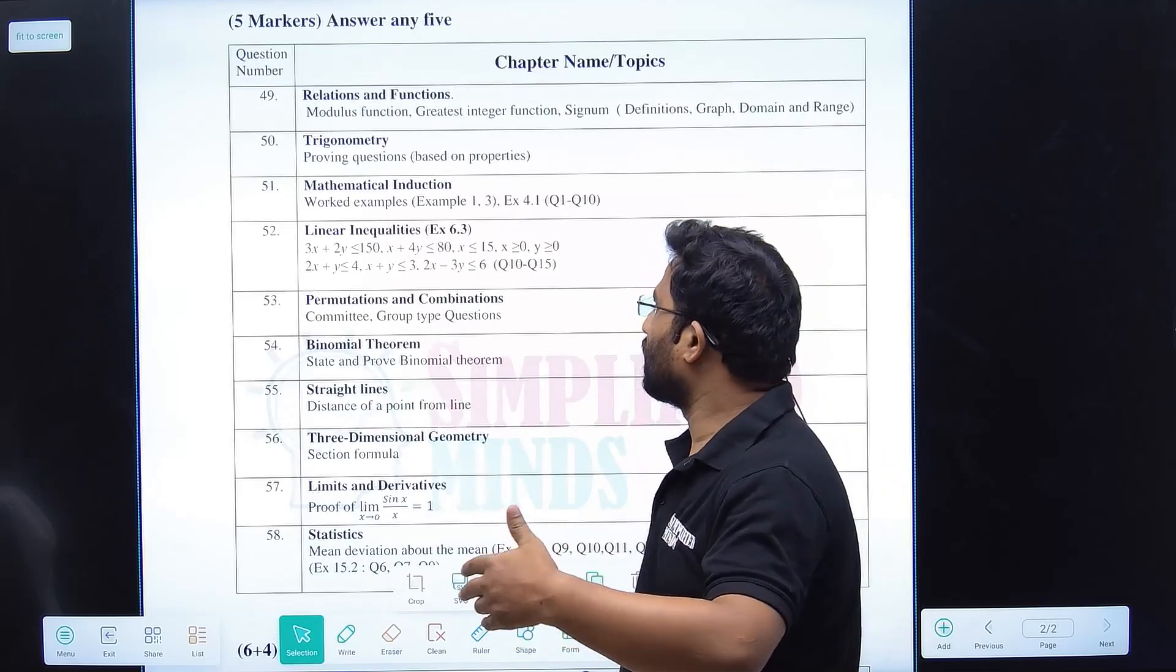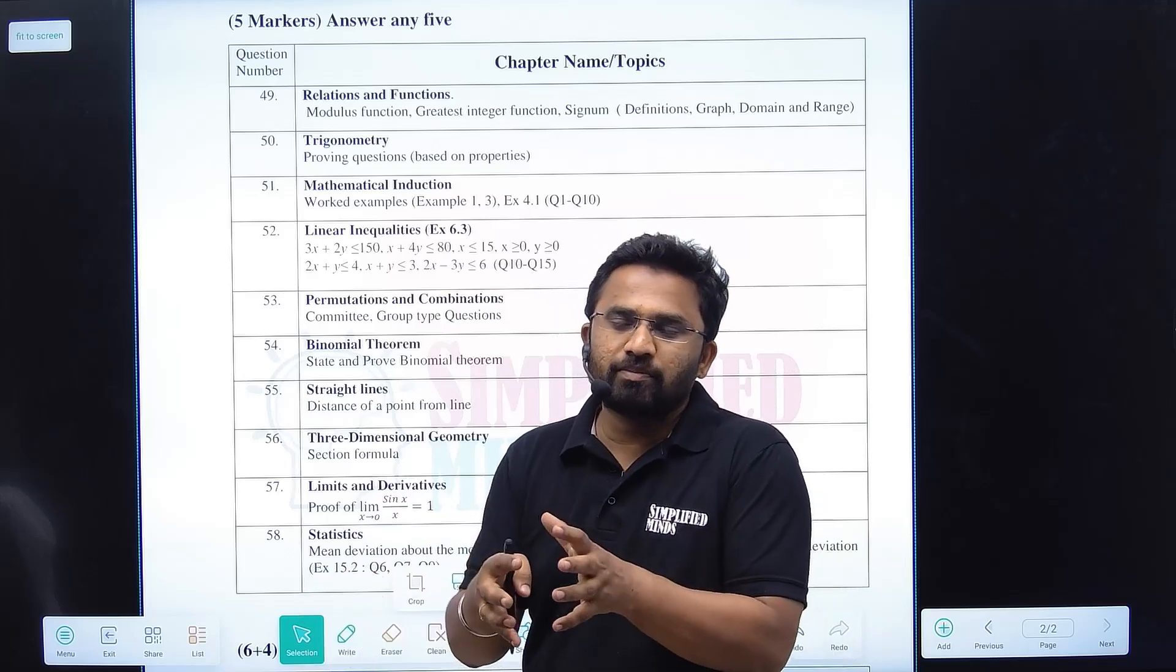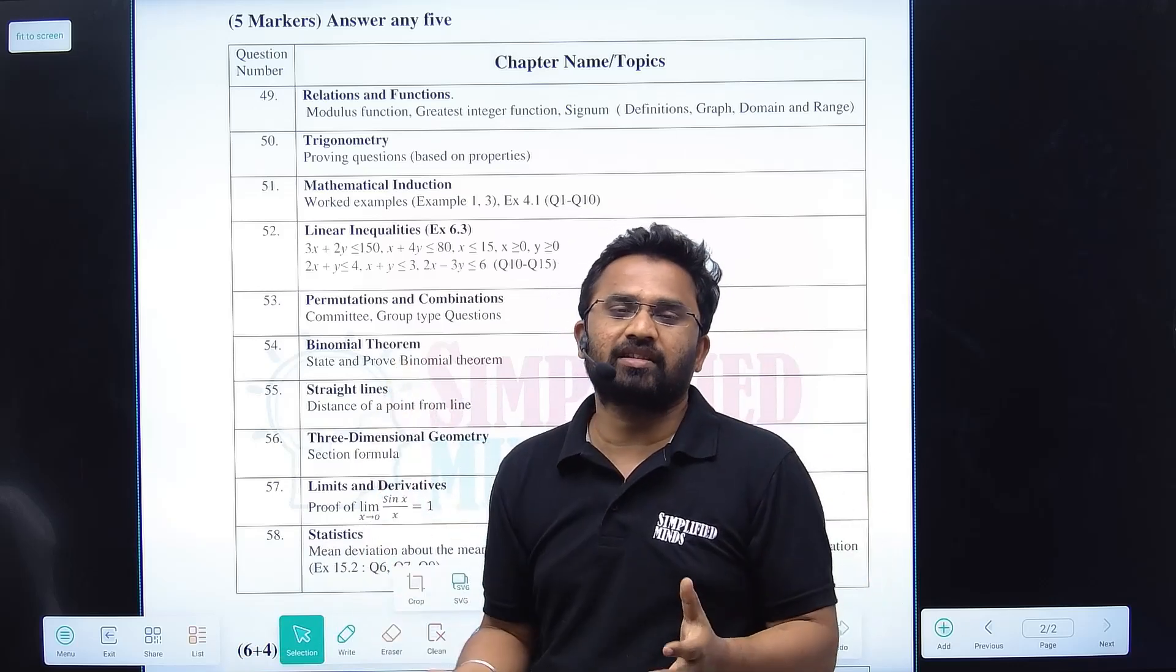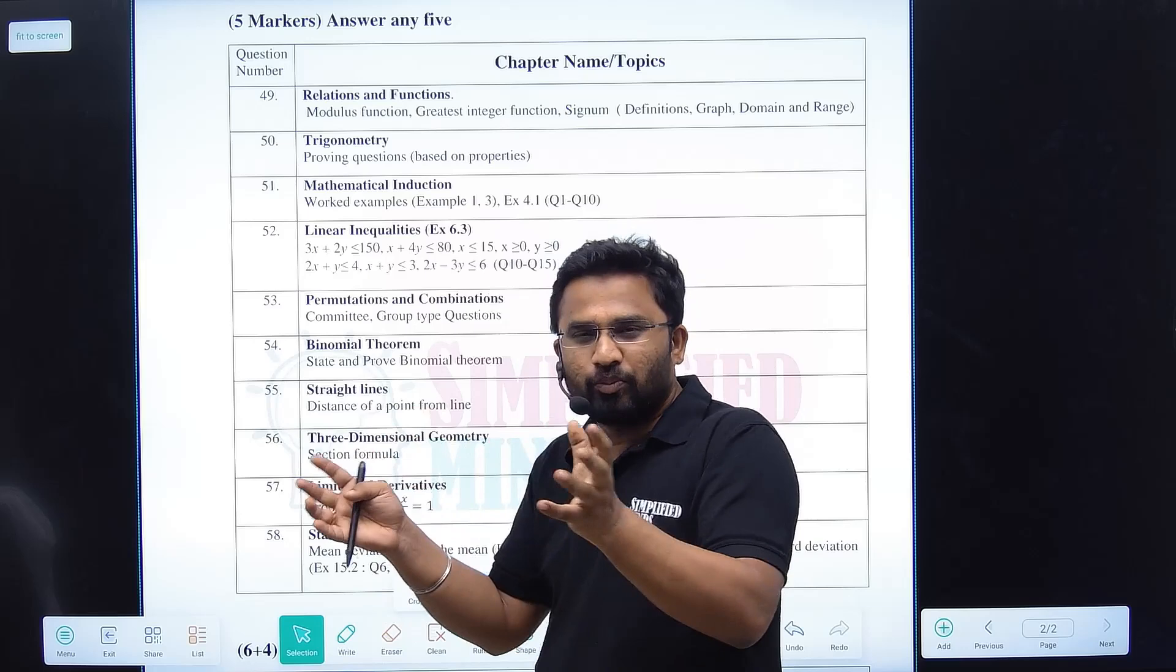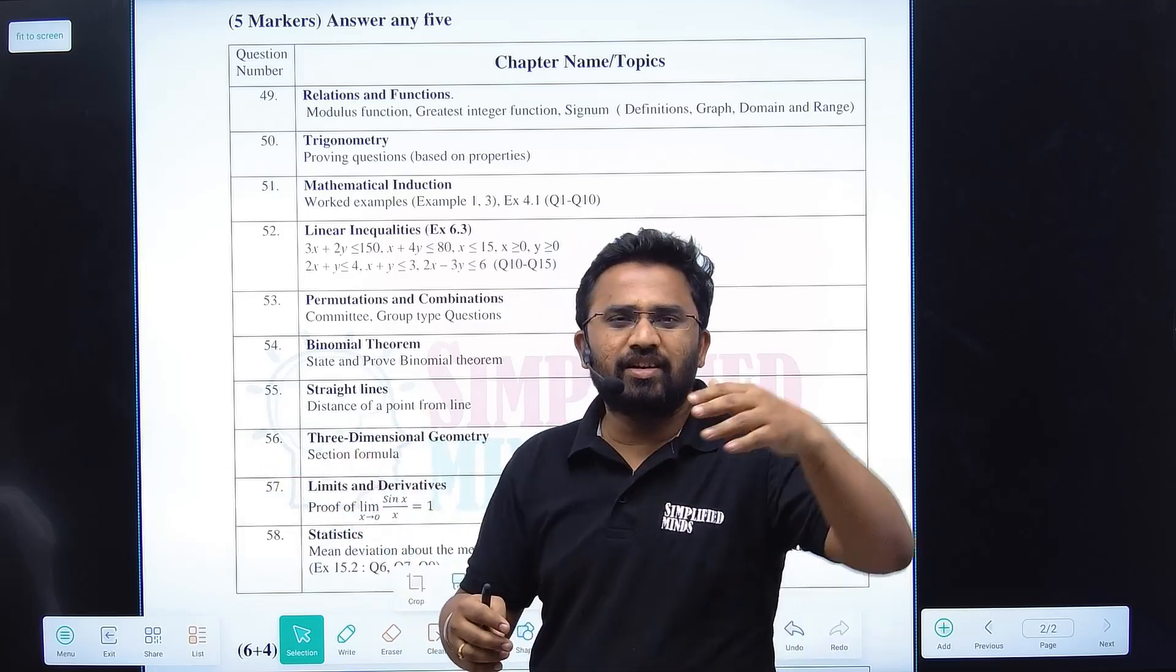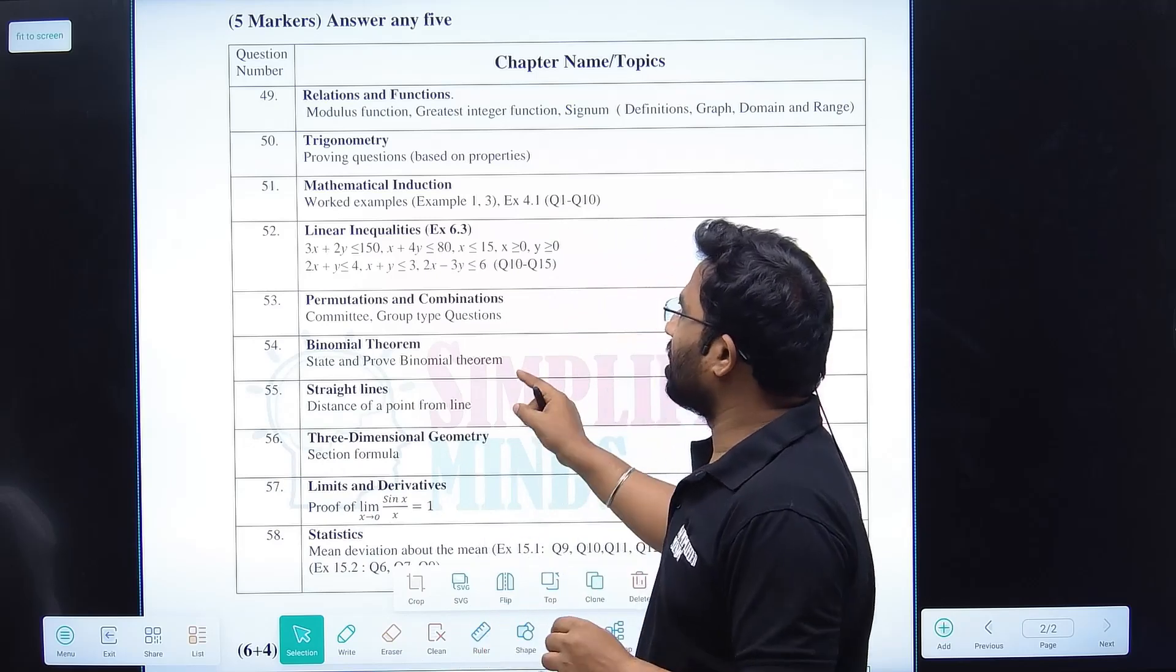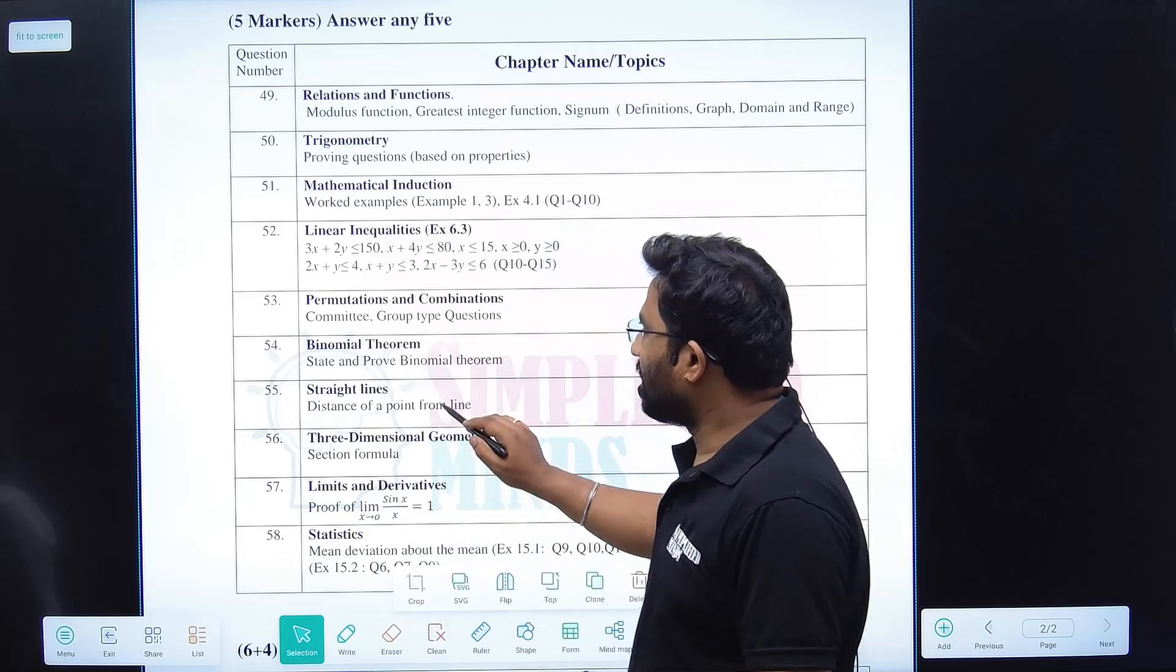Permutations and combinations - focus on committee formation and group formation. Questions like a committee has to be formed, a group of some people has to be formed, at least one girl should be there, one boy should be there. These questions repeat a lot. You can just focus only on committee forming or group consisting of some three girls, four boys. And binomial theorem - every time the question comes, state and prove binomial theorem.